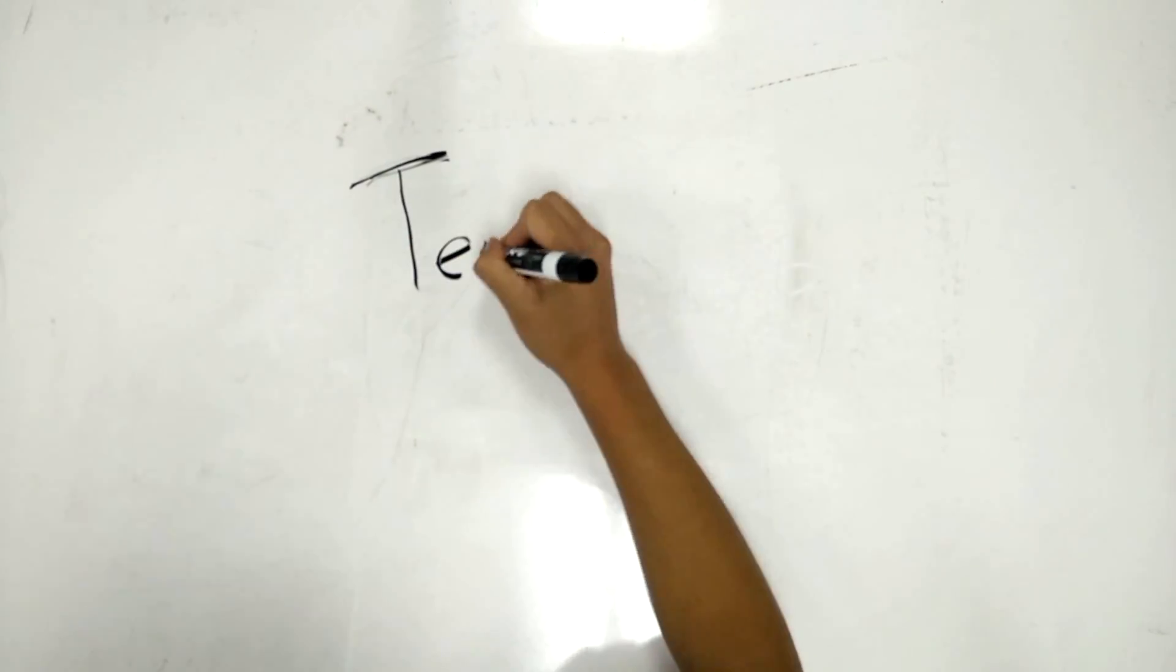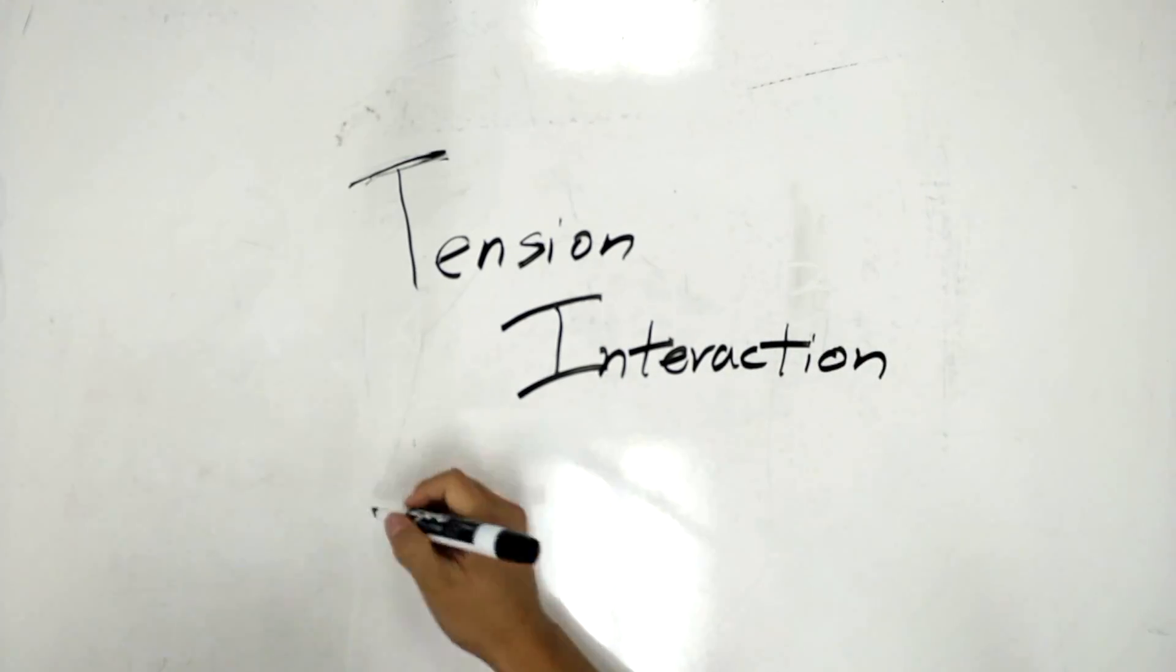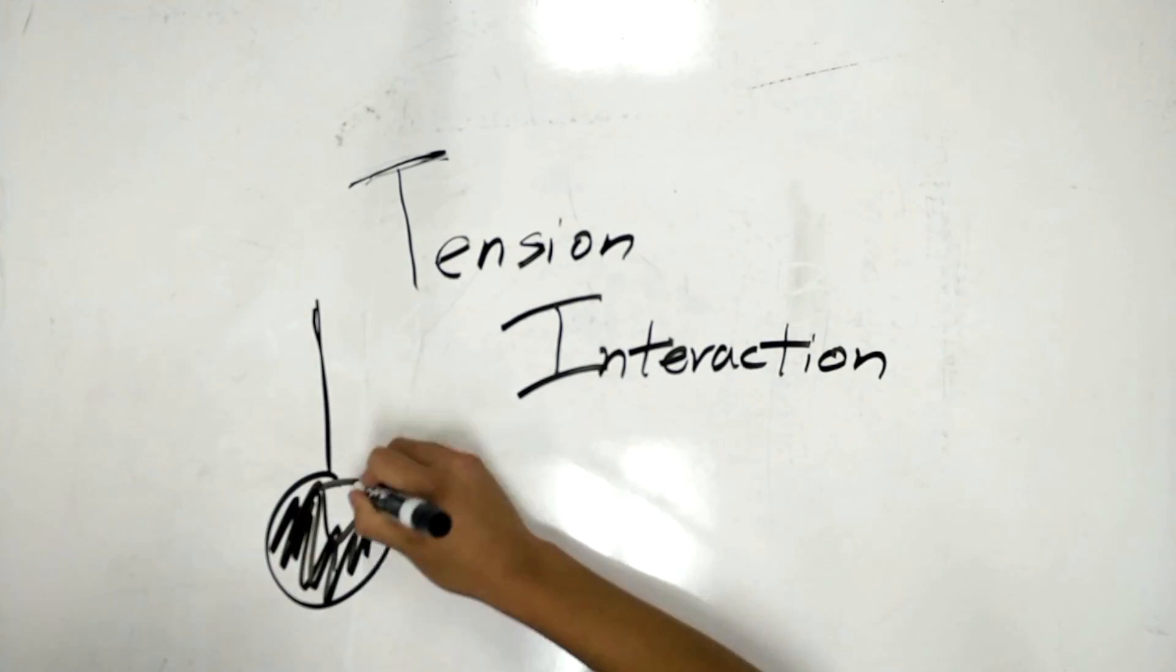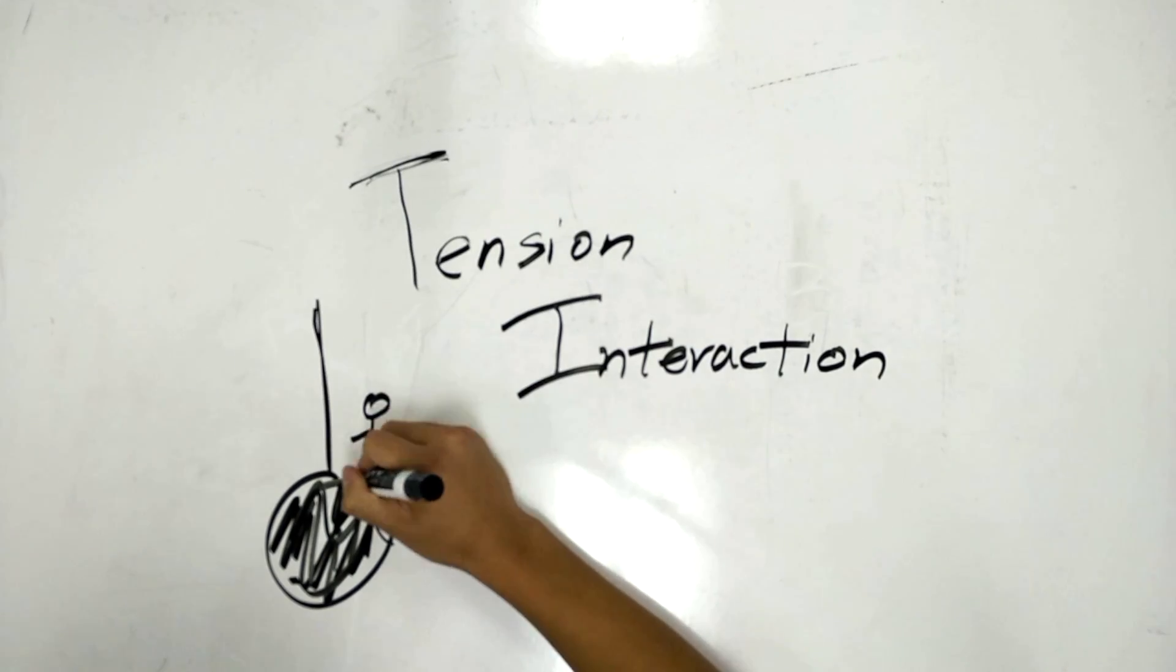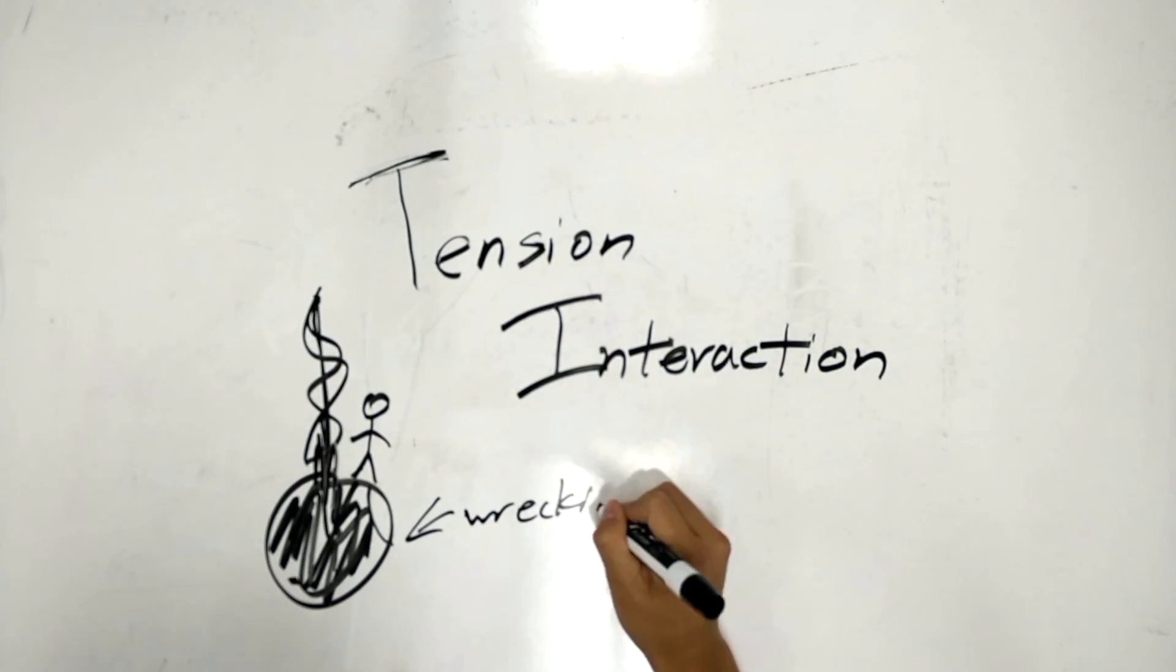Next we have the tension interaction. The tension interaction leads to tension force. Here, we have a wrecking ball. Gravity pulls this wrecking ball down, while there's tension force in the rope that keeps this wrecking ball stable. You can imagine who that person is on the wrecking ball.